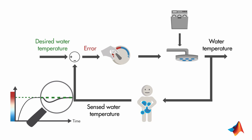If you now want to fully automate this process, you can use a thermocouple that measures the water temperature and then, based on the error, a controller can adjust the shower handle.